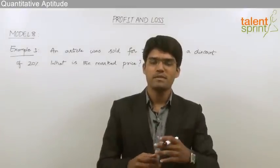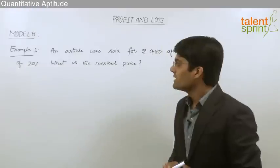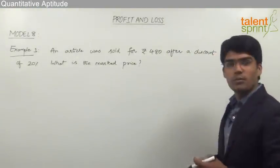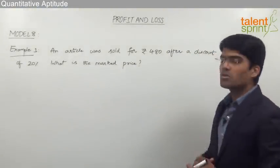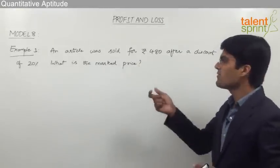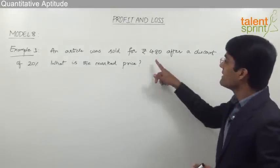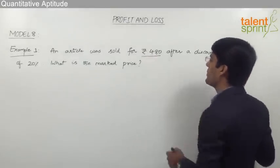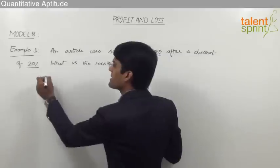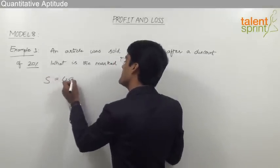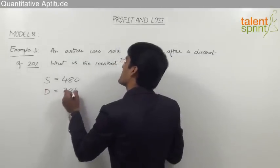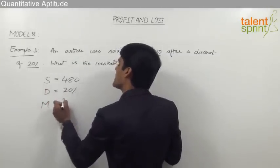Let us now look at the first example based on the concept of discount. An article was sold for rupees 480 after a discount of 20%. What is the marked price? Here we are supposed to find the marked price where the selling price is rupees 480 and the discount is 20%.